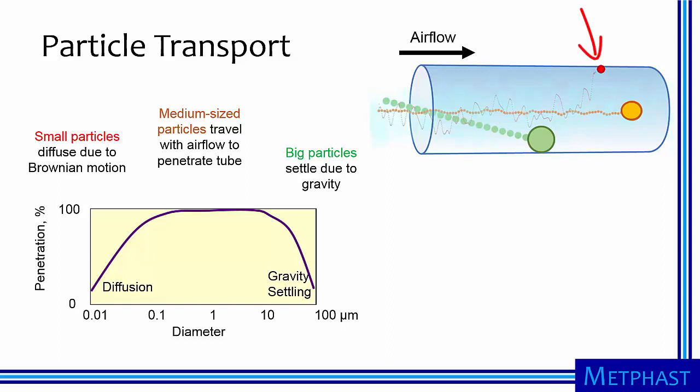Very small particles tend to diffuse to the walls, resulting in low penetration, so shorter tubes are better for nanoparticles.